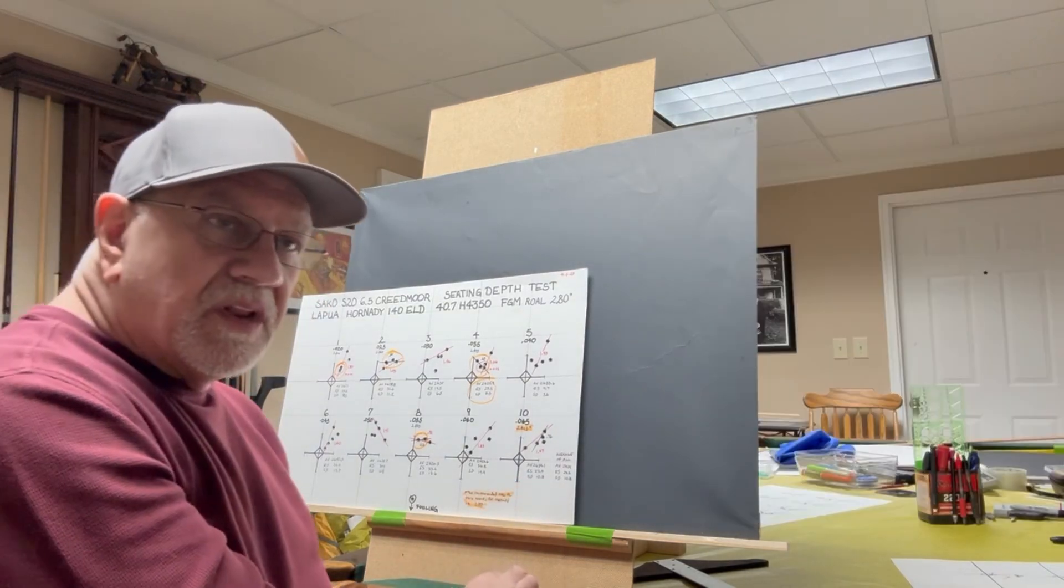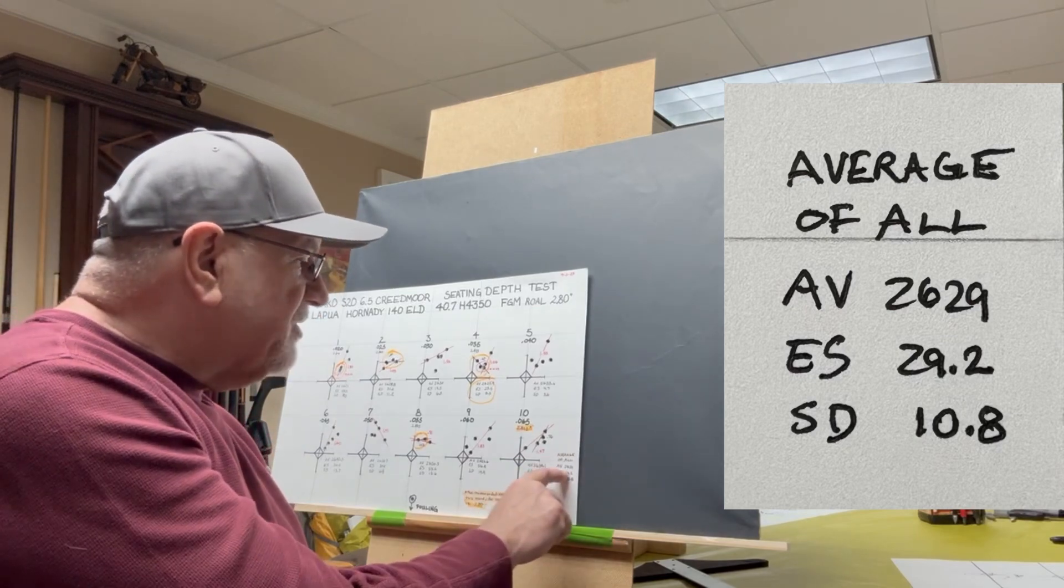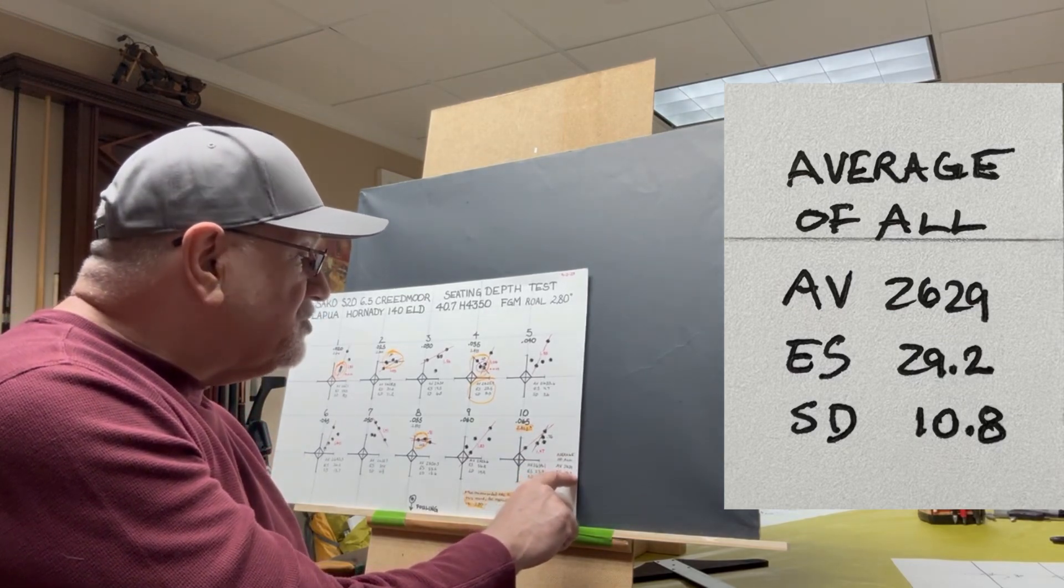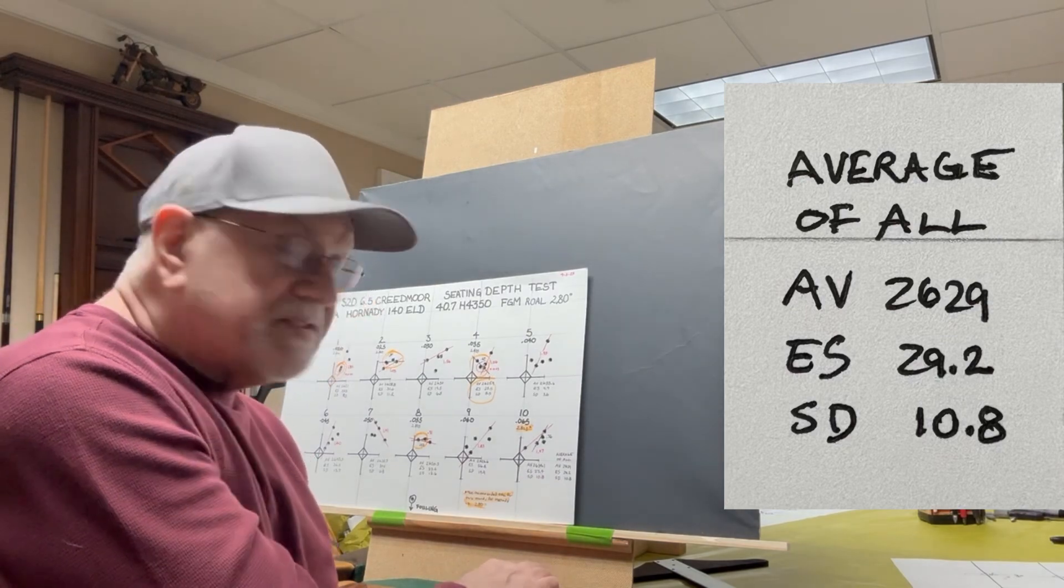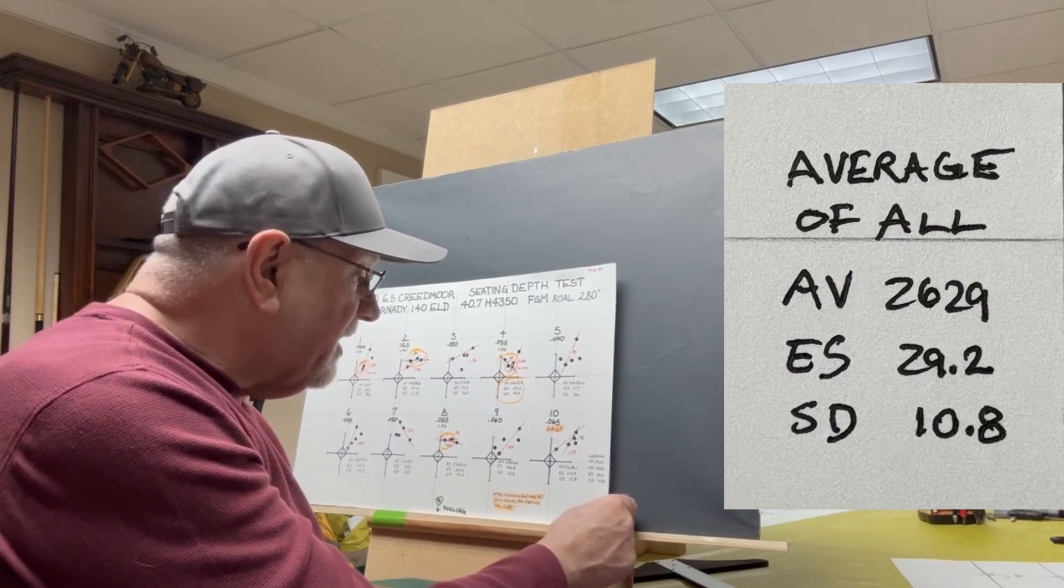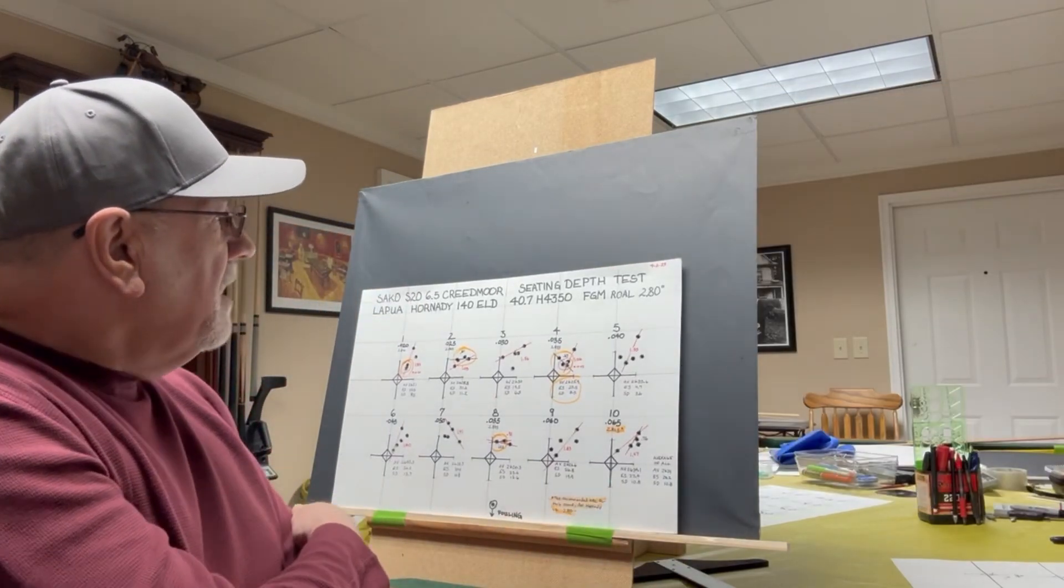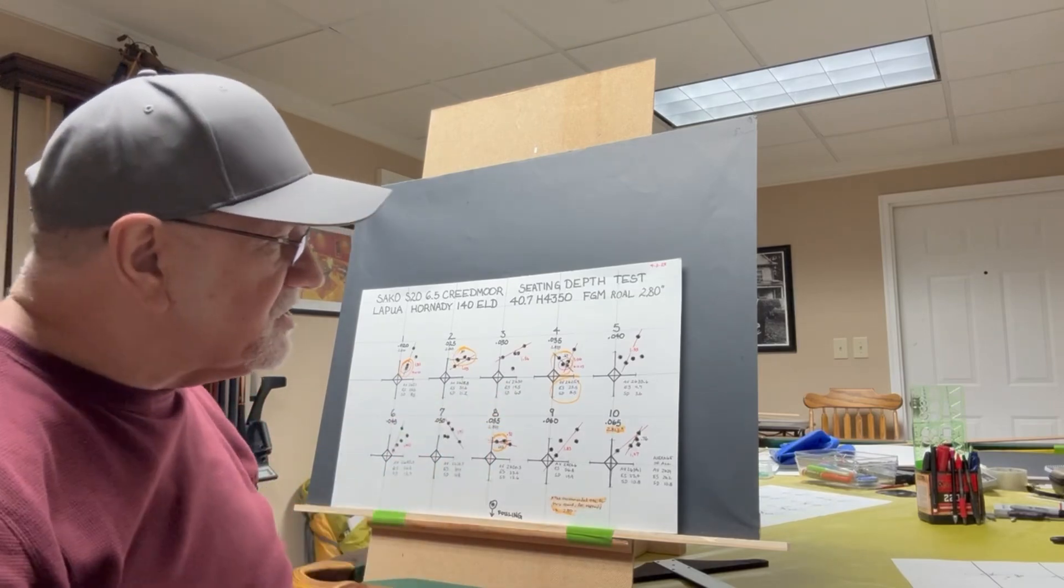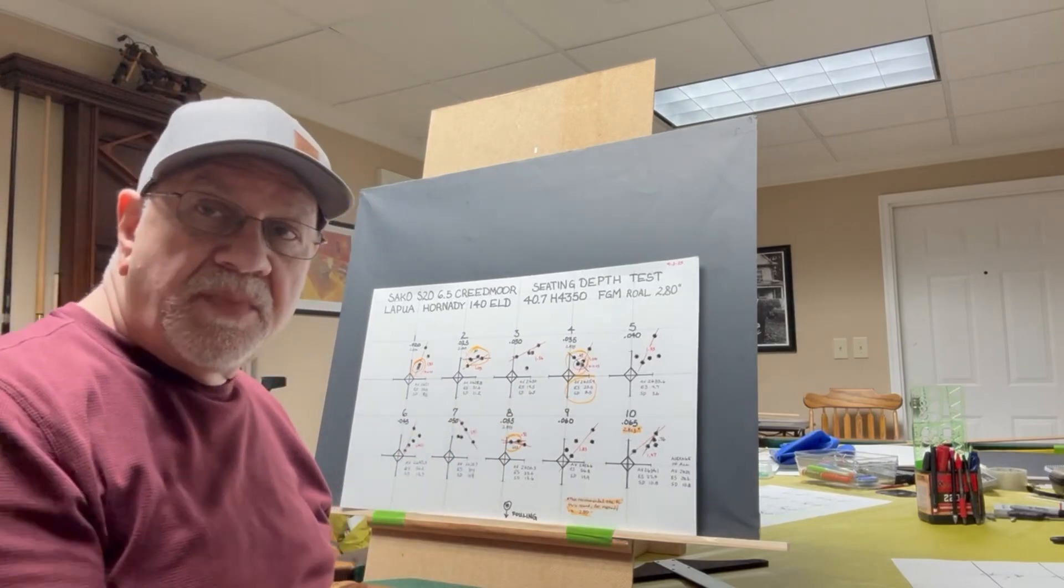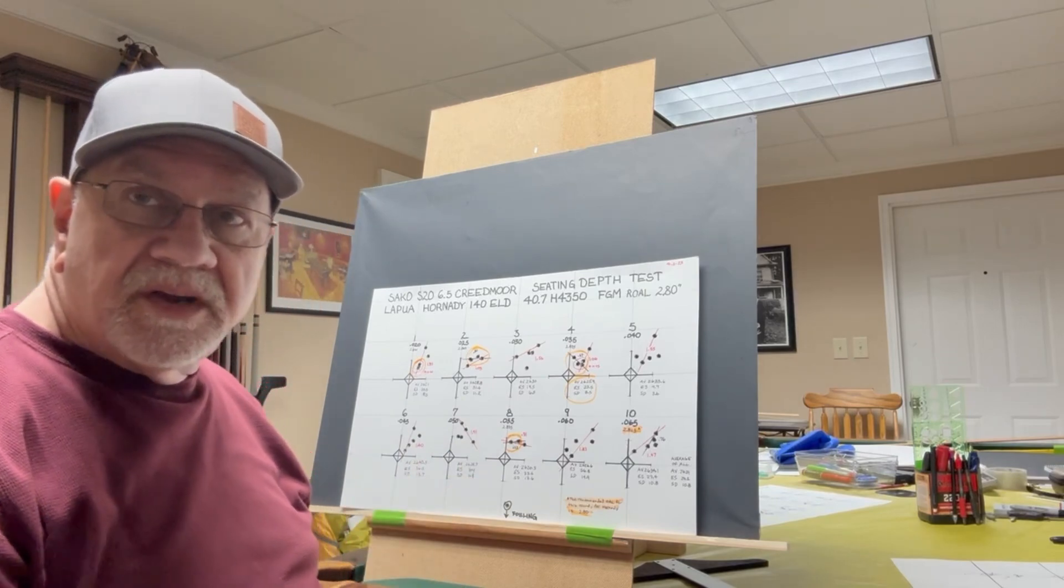If you take the velocity averages on all of these groups, you've got an average velocity of 2,629 feet per second, an extreme spread of only 29.2, and a standard deviation of 10.8. So, this charge weight here looks pretty good, but we're going to vary that just a little bit to see if we can get these groups to tighten up. Now, if you compare this to the previous target when we were shooting three-shot groups, take a look at this.